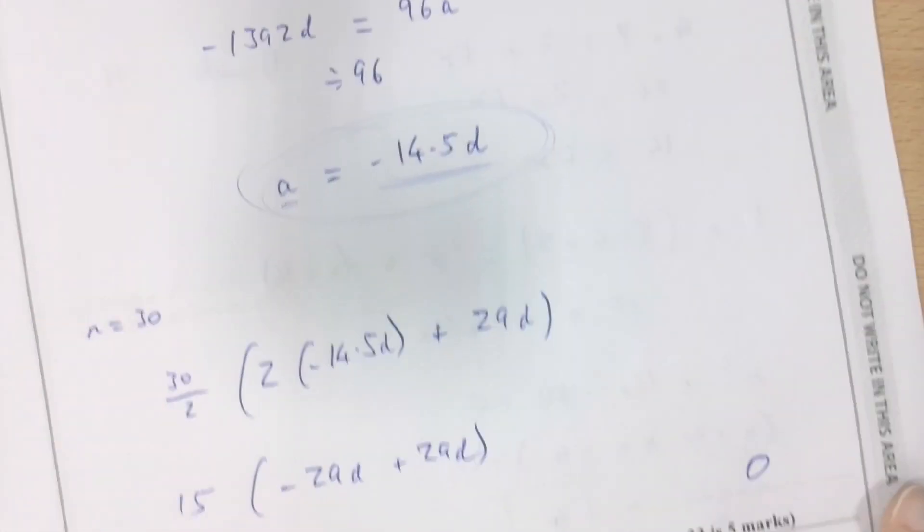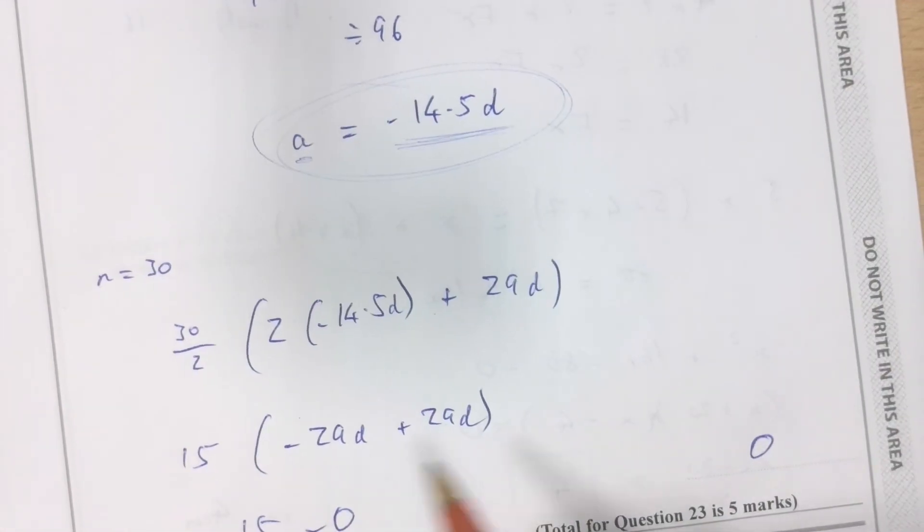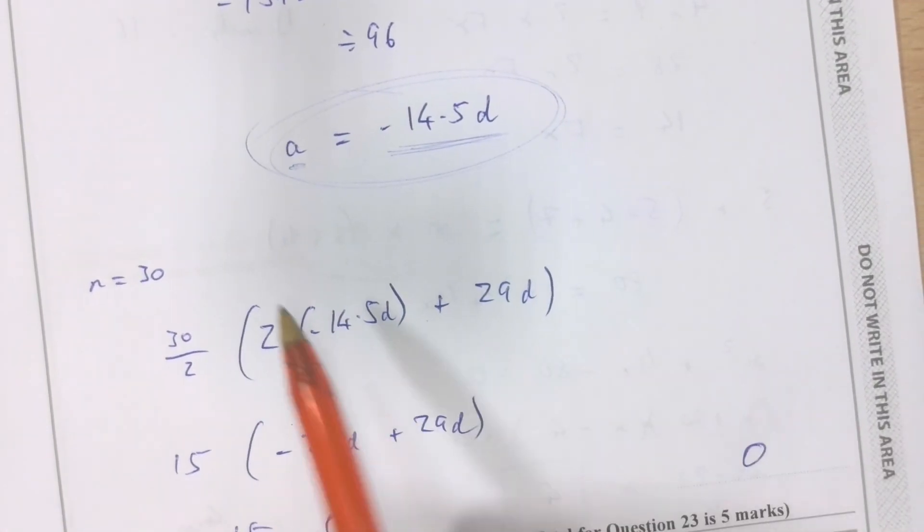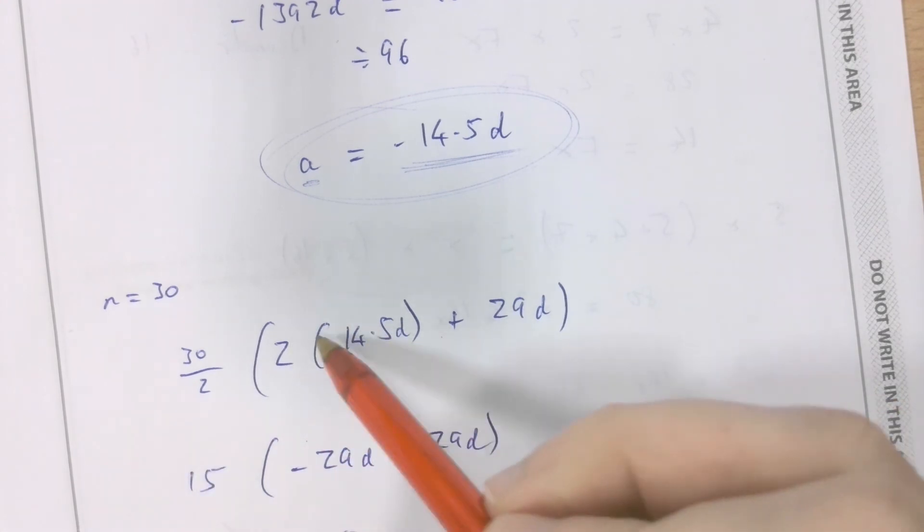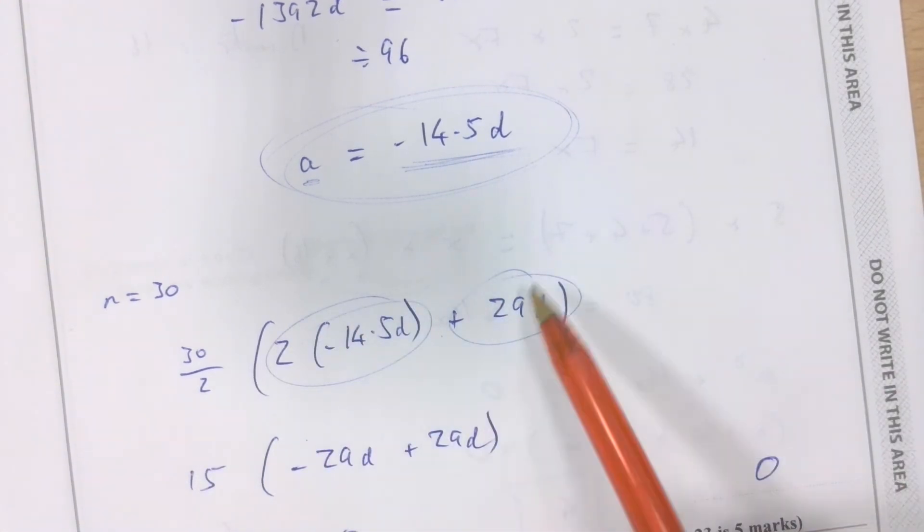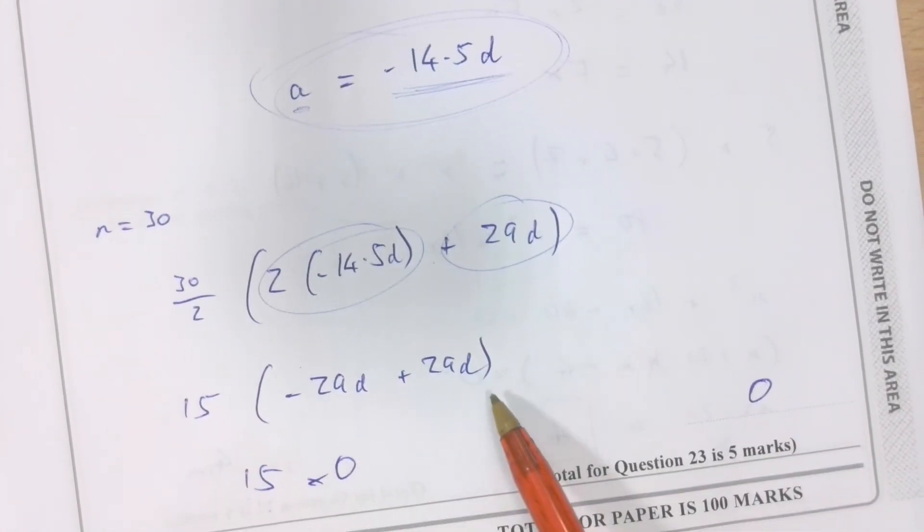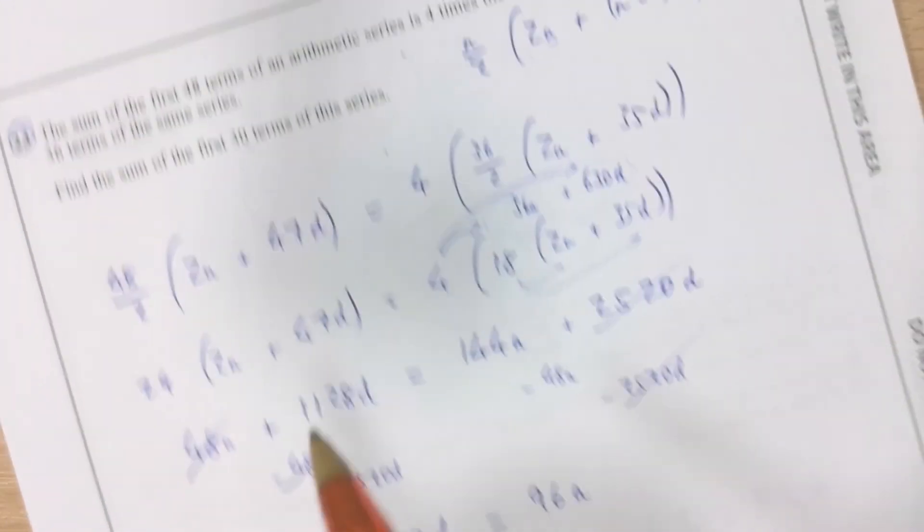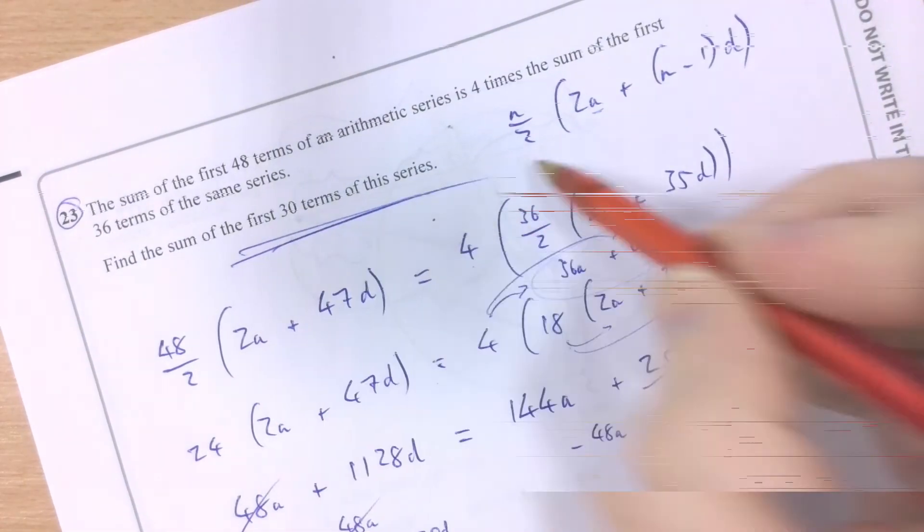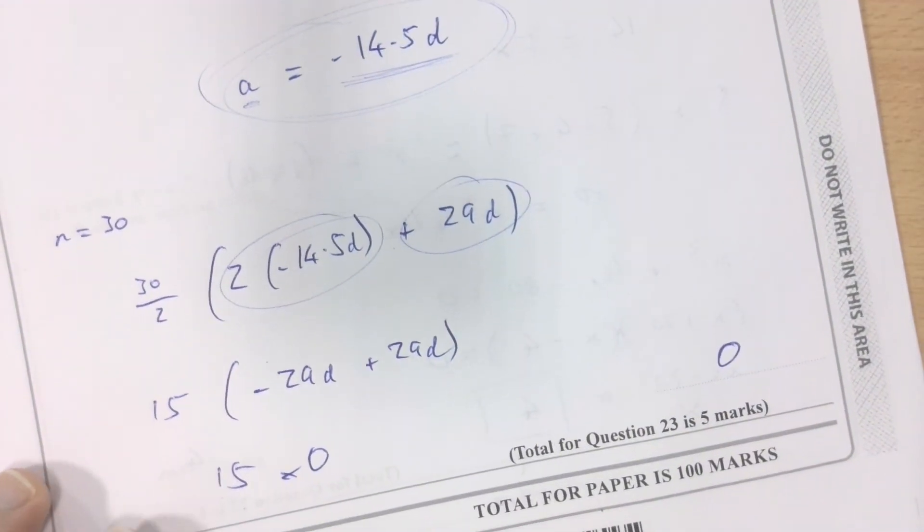Yep. That's it. The answer is 0. And the reason it is is because when you substitute in a in terms of d, in this particular case, this value and this value are equivalent in size, one being negative, one being positive, becomes 0. So, effectively, the sum of the first 30 terms of this series is 0 in this case.